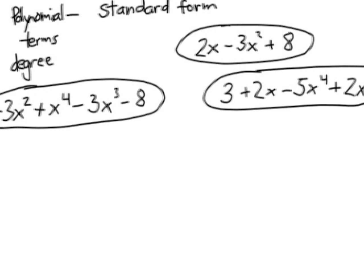This first polynomial has four terms. We have a negative 3x squared term, an x to the 4th term, a negative 3x to the 3rd term, and a negative 8. Now, I look at the powers, and I notice there's a 2nd power, a 4th power, a 3rd power, and no power, or even an x term at all.